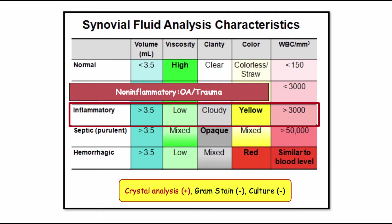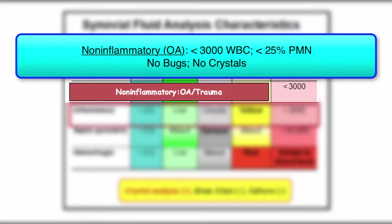The joint effusion in both conditions is described as inflammatory. But what does that actually mean? Non-inflammatory, as seen in osteoarthritis, has few white blood cells present, and if they are present, less than 25% are PMNs. There are no bugs and no crystals.